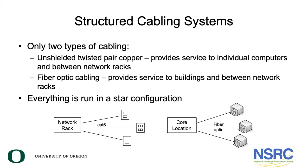As you look at a campus, there are really only two types of cabling. There's unshielded twisted pair, which provides service to individual computers and between network racks. And you have fiber optic cabling, which provides service between buildings, from your core location to each building, and possibly between network racks.